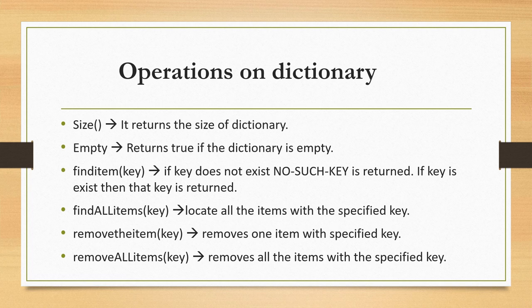Find item of key: if the key is present, then that key's value is returned; if not present, it returns no such key. Find all items is used to locate all the items with the specified key. Remove the item is used to remove one item with the specified key. Remove all items of key is used to remove all items present with the specified key only.